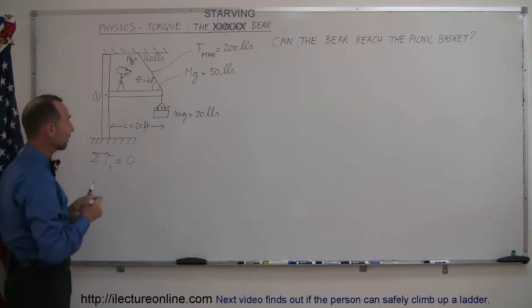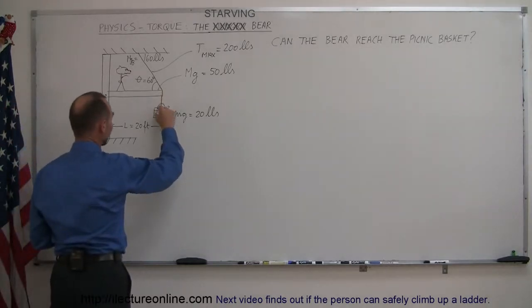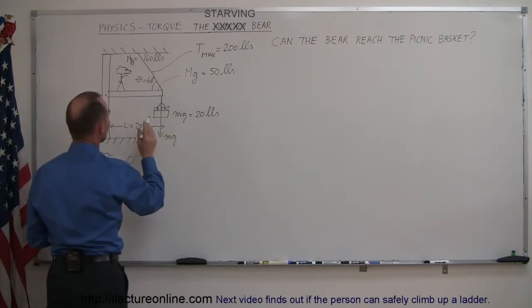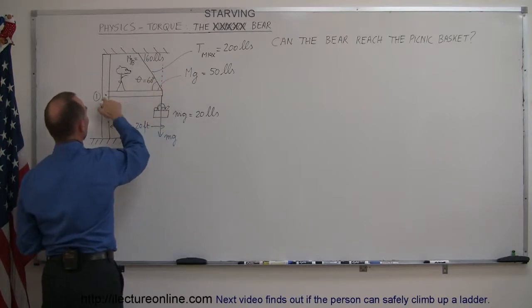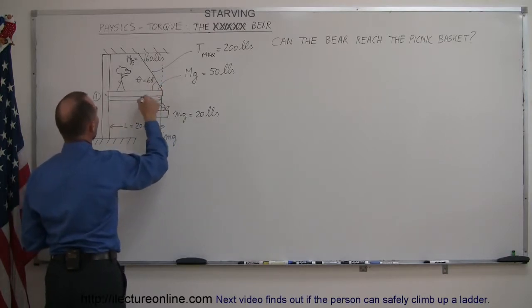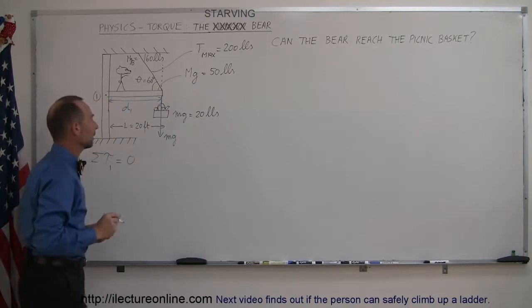The first one we have is the picnic basket which is hanging down like this. So that's the MG and then we need to know the distance from the line of action of the force to the pivot point, the perpendicular distance right here would be distance one, D1.